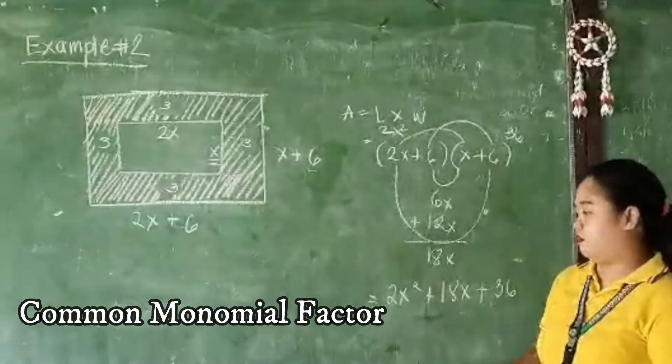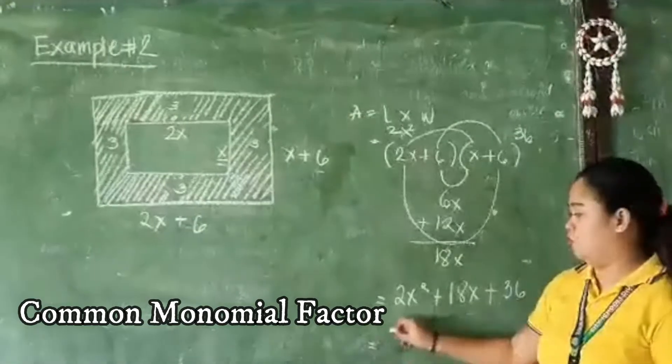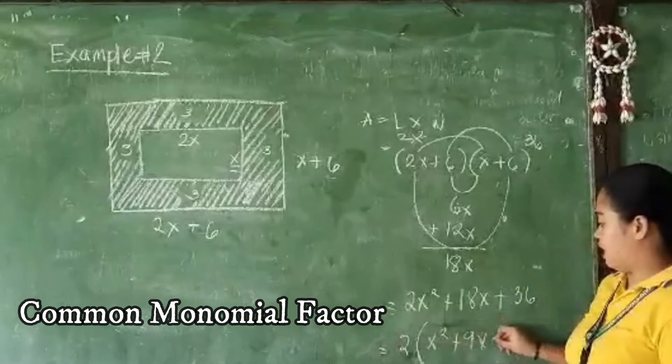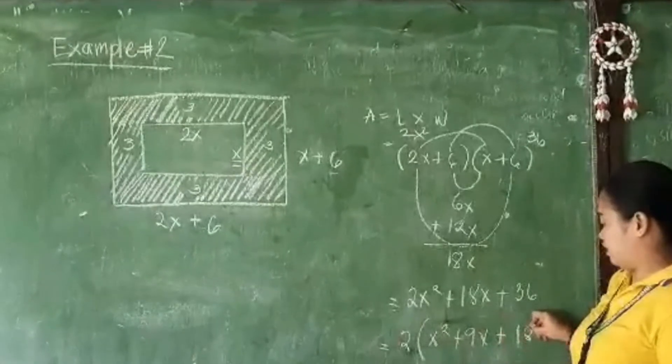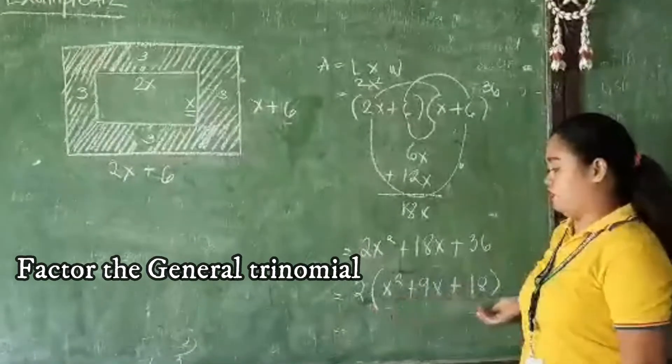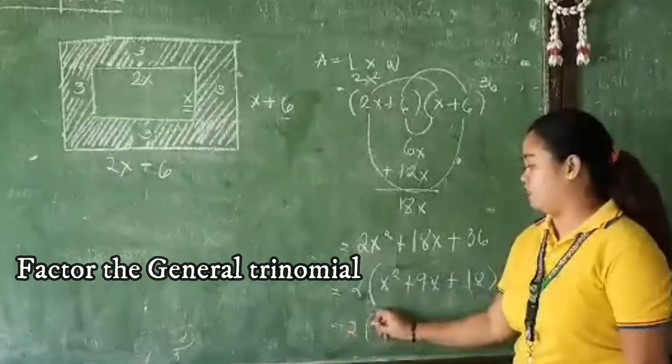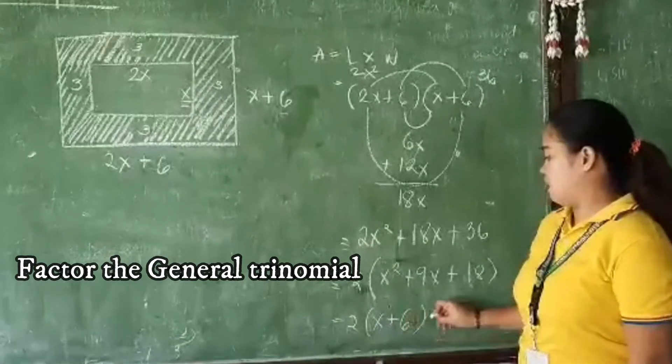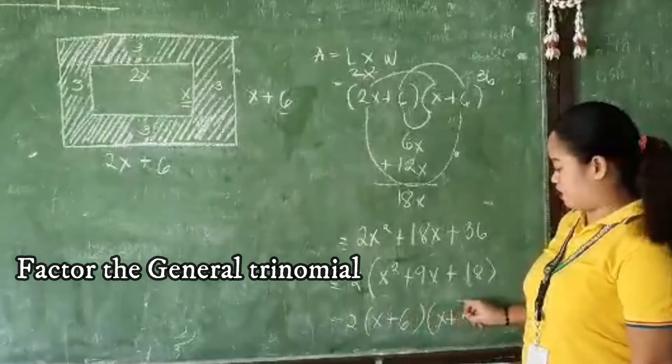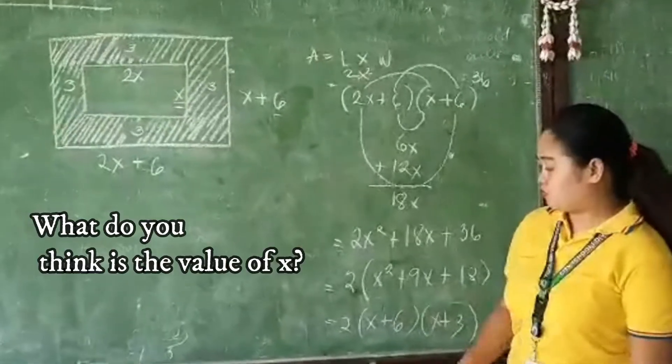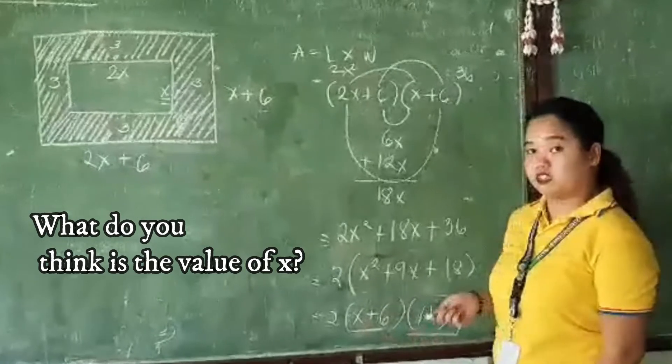So we have a common number, which is 2. So x squared plus 9x plus 18. So we need to factor this polynomial. So we have x plus 6 and x plus 3. So we need to, what will be the value of x? Can you guess?